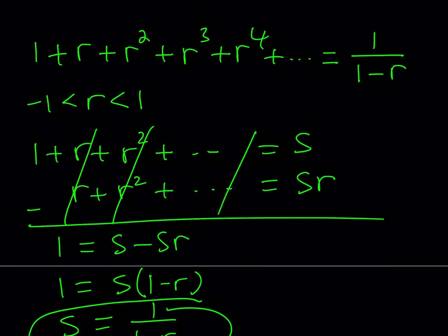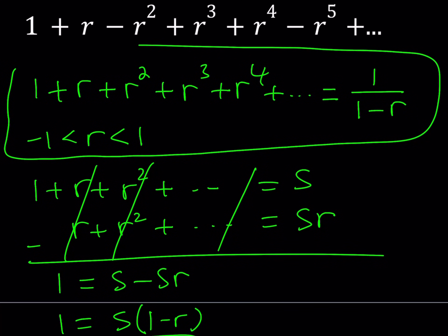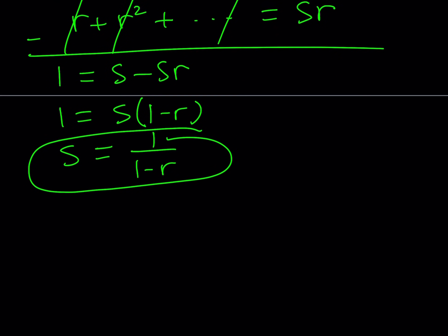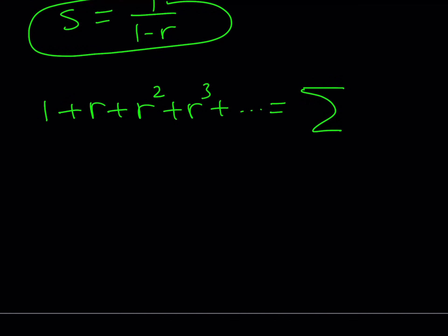Now let's see how we can use this geometric series to evaluate our expression. The sum 1 + r + r² + r³ + ... can be written in sigma notation: the sum from k = 0 to infinity of r^k. This is a more compact form for the series.